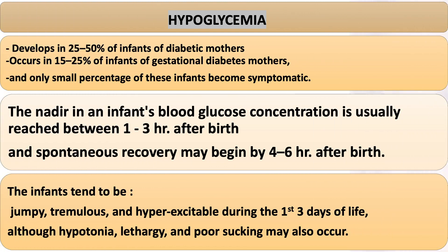Hypoglycemia develops in 25–50% of infants of diabetic mothers and occurs in 15–25% of infants of gestational diabetes mothers; only a small percentage of these infants become symptomatic. The nadir in blood glucose concentration is usually reached between 1–3 hours after birth, and spontaneous recovery may begin by 4–6 hours. The infants tend to be jumpy, tremulous, and hyper-excitable during the first three days of life.